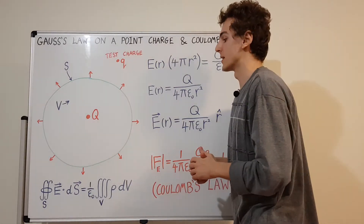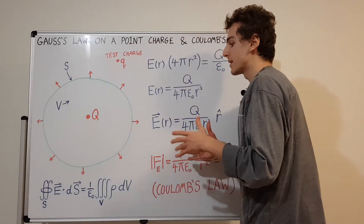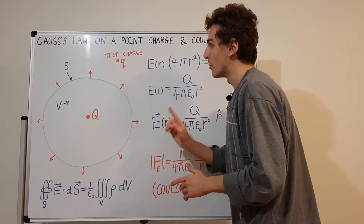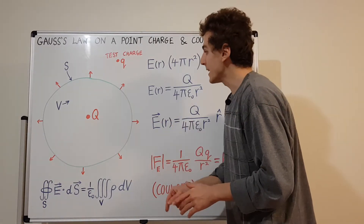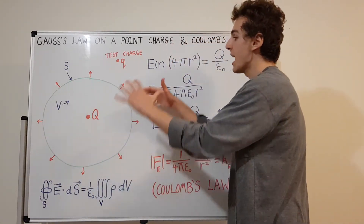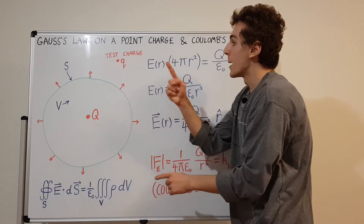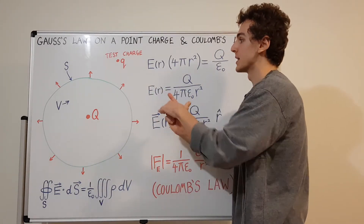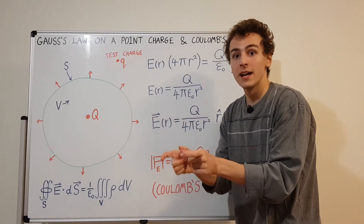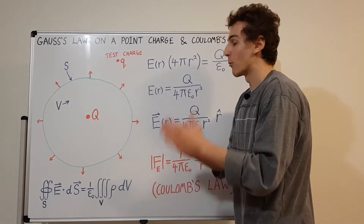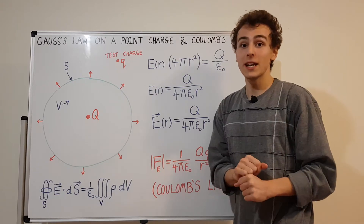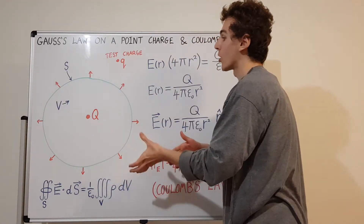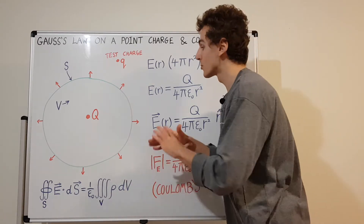Now let's look at the left-hand side: the surface integral. You might think it's hard to do a surface integral — you have to parameterize the surface with two variables. But remember, this has spherical symmetry, which means that at every point along the surface of the sphere, the electric field is going to be parallel to the normal vector. The normal vector points perpendicular to the surface at every point, and so does the electric field. So their dot product is just the magnitude of the electric field.